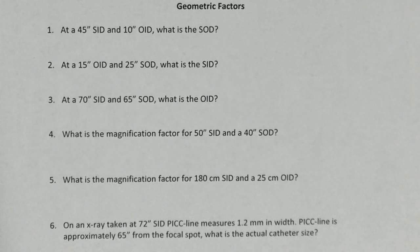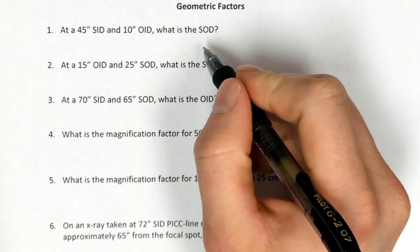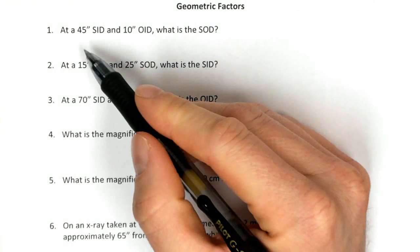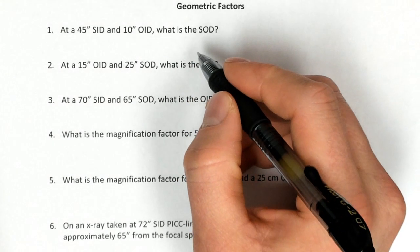Let's spend a little bit of time talking about geometric factors and the way to calculate some of these different technical considerations for our images. So this first problem is asking us, at a 45-inch SID and a 10-inch OID, what is the SOD?